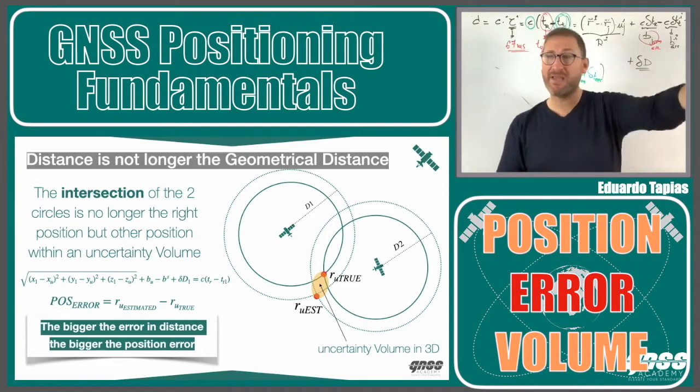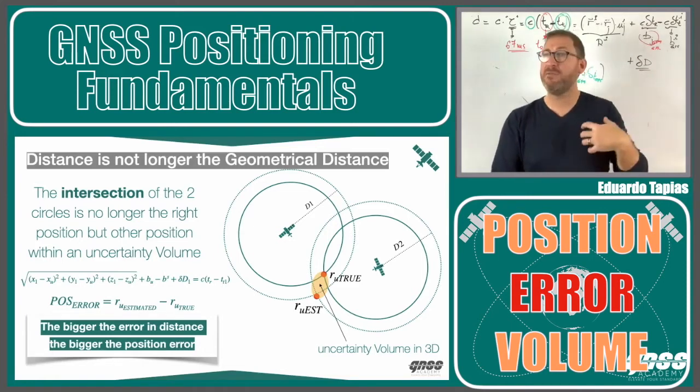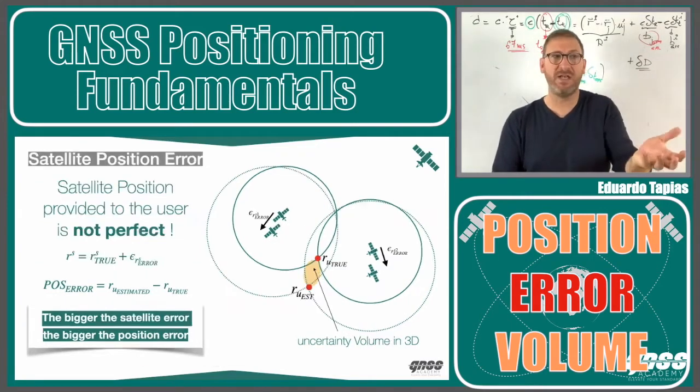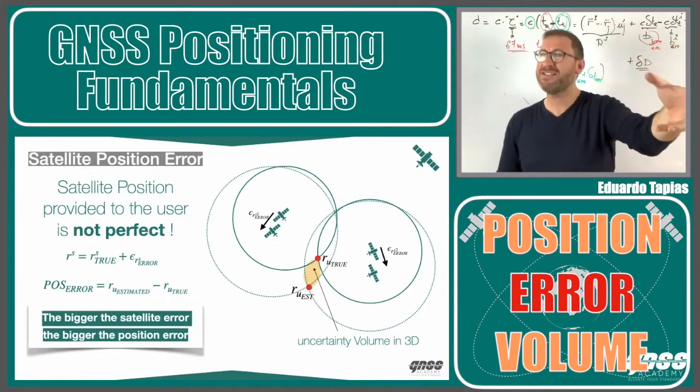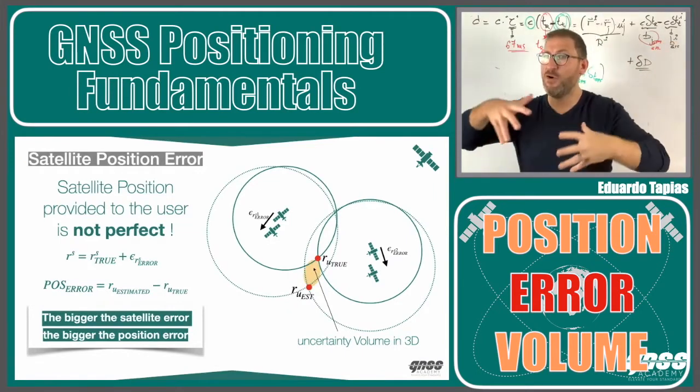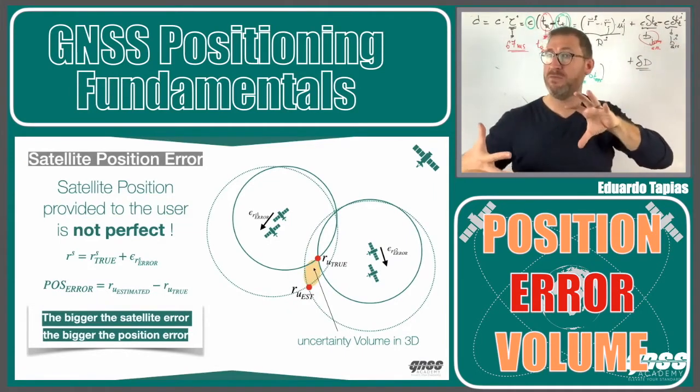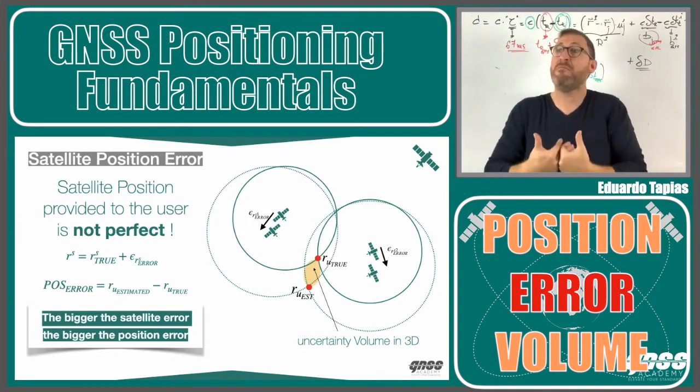But it's not only this, satellite position in my equation is given also to me by the satellite, by the navigation message. Then if the position of the satellite has an error, the volume will be still even more deforming. Then I will have even more uncertainty in my solution.